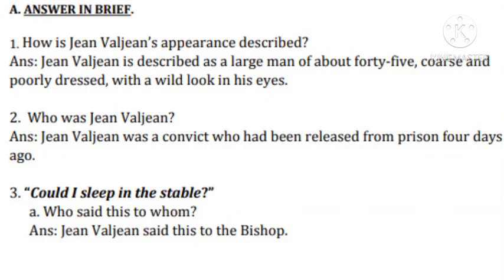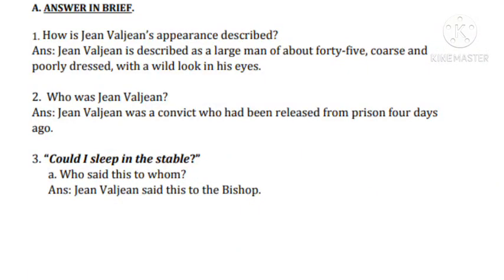Now let's move to page number 53. The first question: How is Jean Valjean's appearance described? Jean Valjean is described as a large man of about 45 years old. He is coarse — meaning very rough in nature, with behaviour that is not at all soft spoken. He first spoke in a threatening voice. He is poorly dressed — his clothes are old and torn. He has a wild, fierce look in his eyes, like how villains are presented in films.